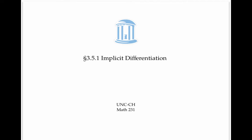Implicit differentiation is a technique for finding the slopes of tangent lines for curves that are defined indirectly, and sometimes aren't even functions.